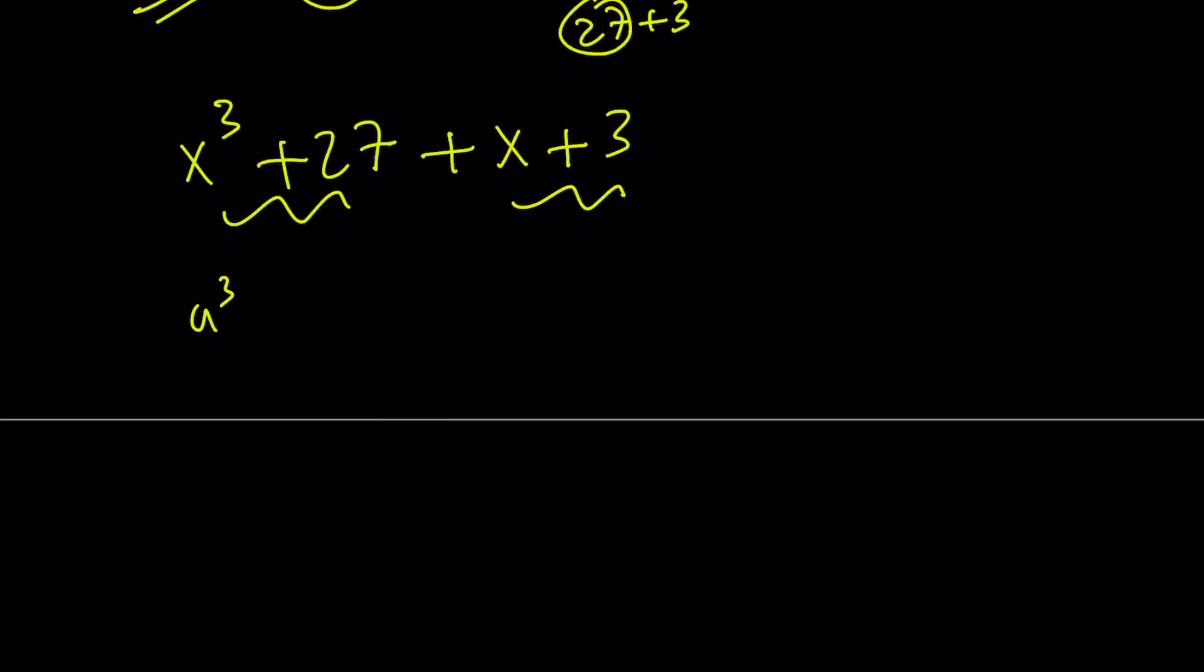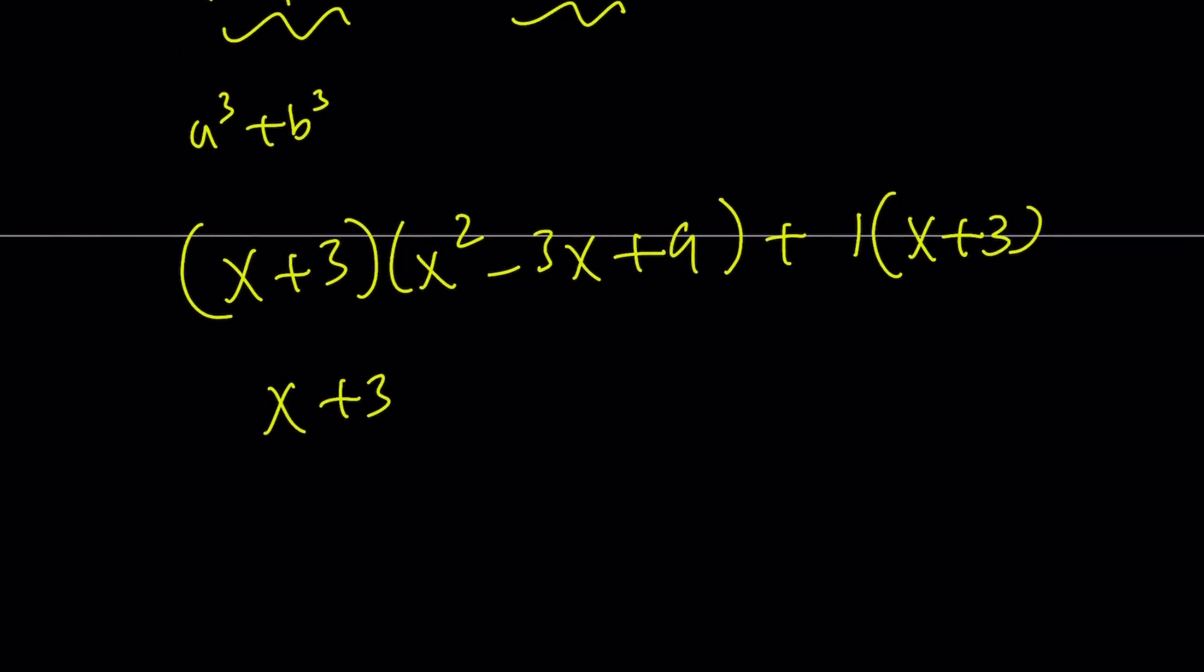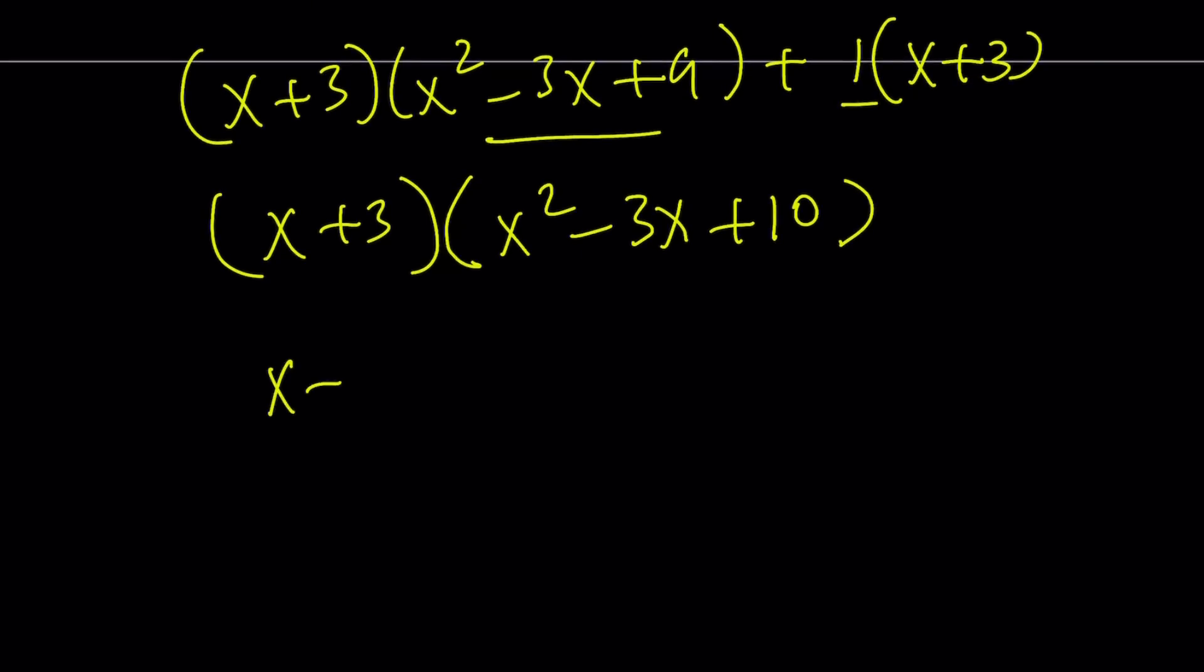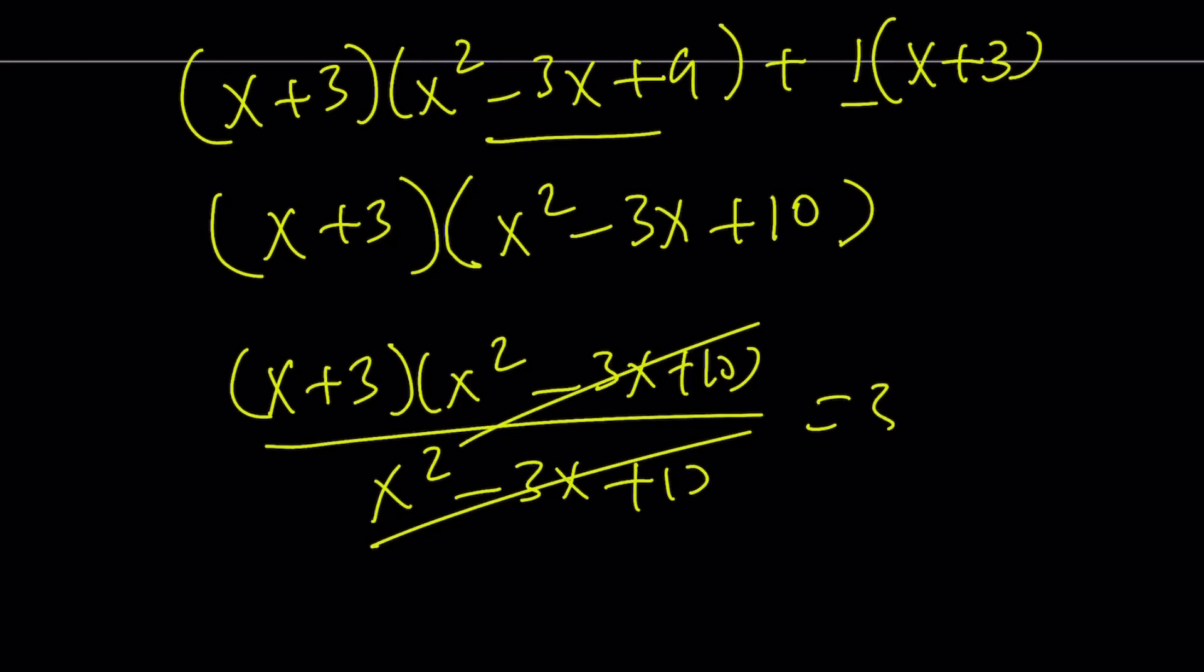And x cubed plus 27 is a sum of two cubes. Remember the formula, a cubed plus b cubed formula. I'm not going to give it to you. You already know it, hopefully. It can be written as x plus 3, x squared minus 3x plus 9. And x plus 3 is just 1 times x plus 3. And x plus 3 is a common factor. If you take it out, this plus 1 is going to give you the other factor, x squared minus 3x plus 10. Now, our expression involved this divided by x squared minus 3x plus 10, which means the answer is x plus 3. And that is 3 to the power of 13 plus 3 as before.